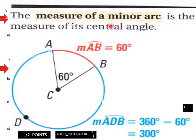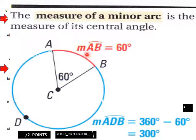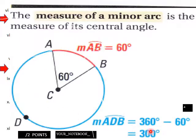The measure of a minor arc equals the measure of its central angle. For example, if the central angle is 60 degrees, then the measure of minor arc AB is 60 degrees. The major arc would then be 360 minus 60, which equals 300 degrees.